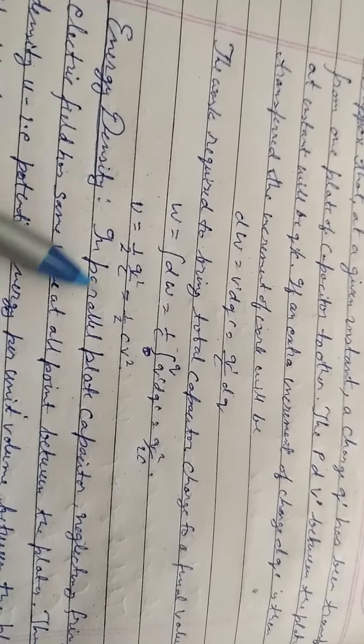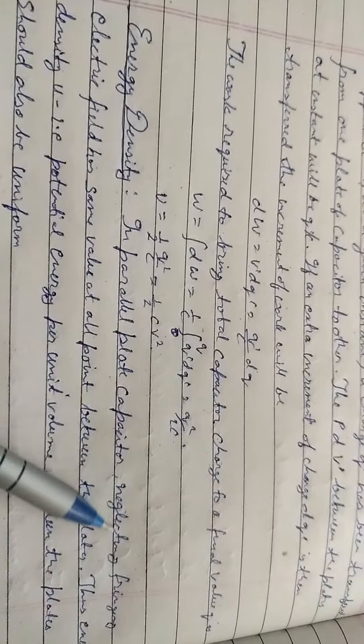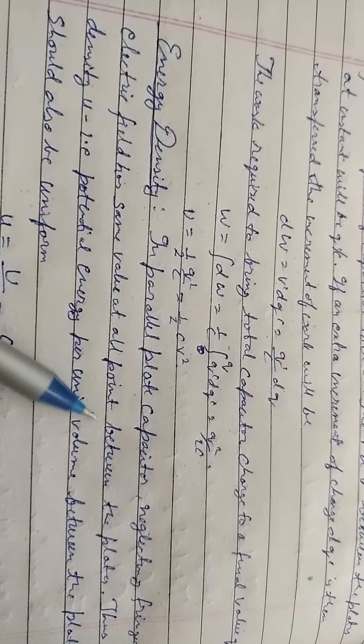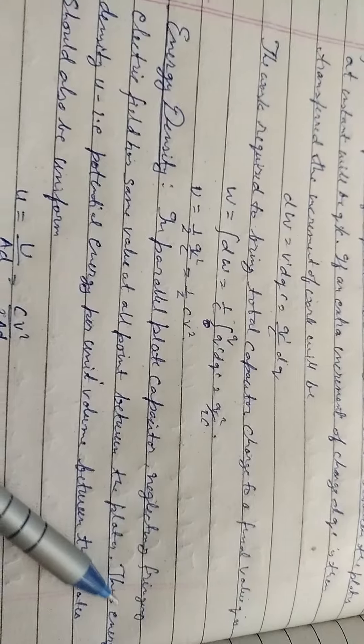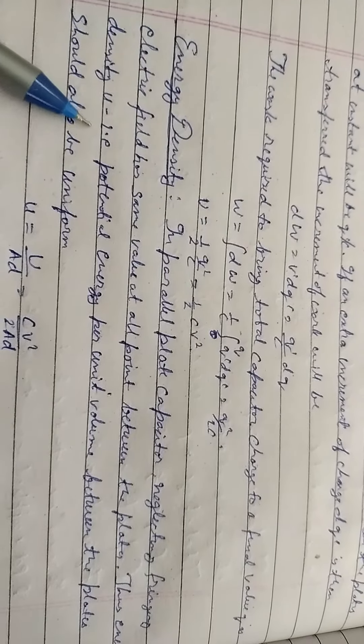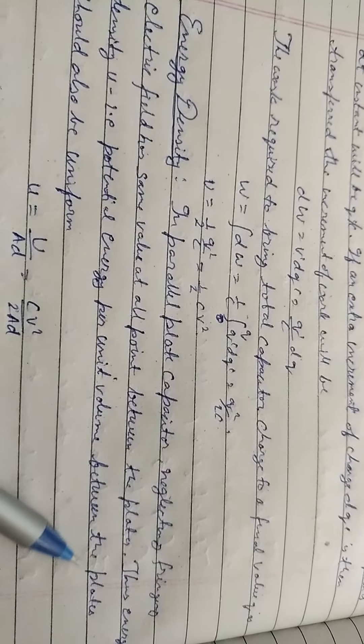Energy density. In a parallel plate capacitor, neglecting the fringing, electric field has same value at all points between the plates. Thus, energy density U, that is potential energy per unit volume between the plates, should also be uniform.